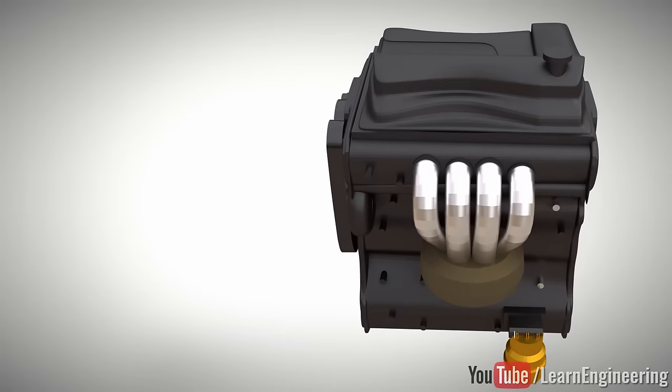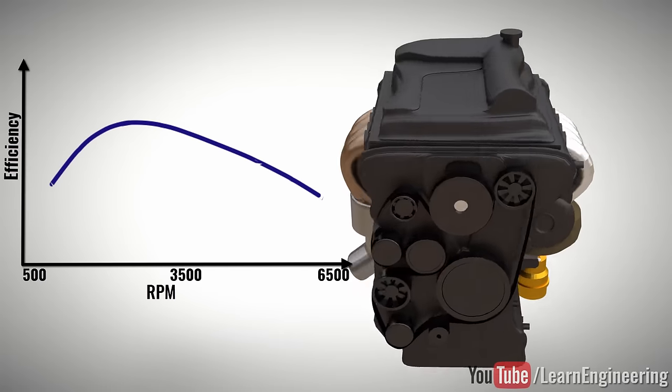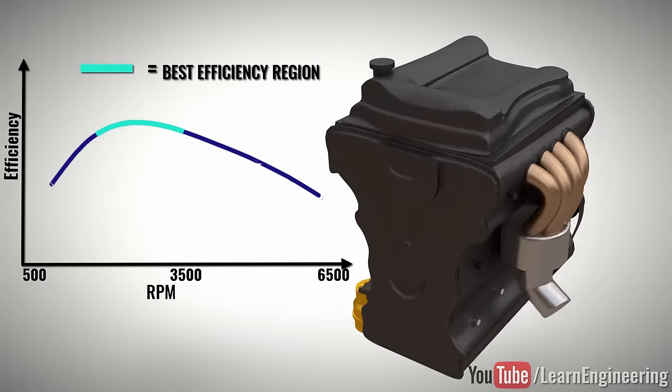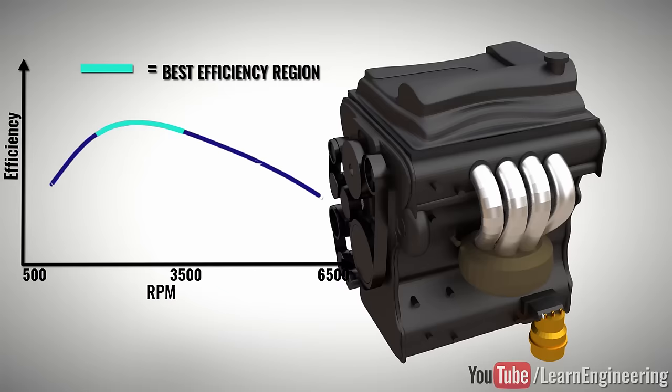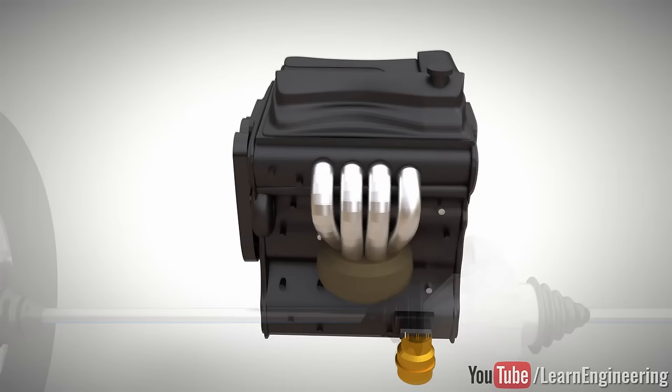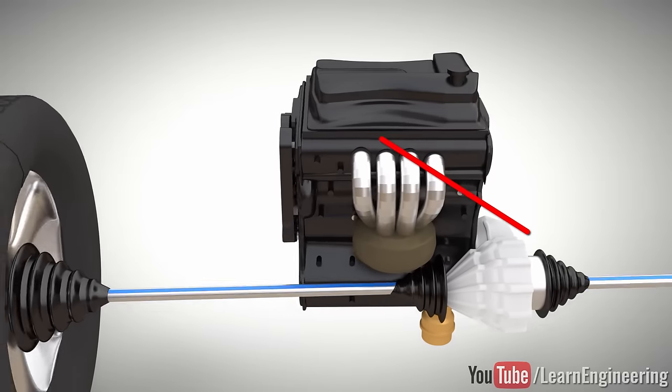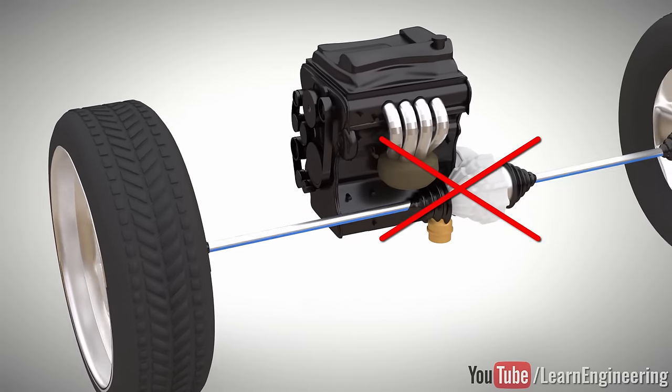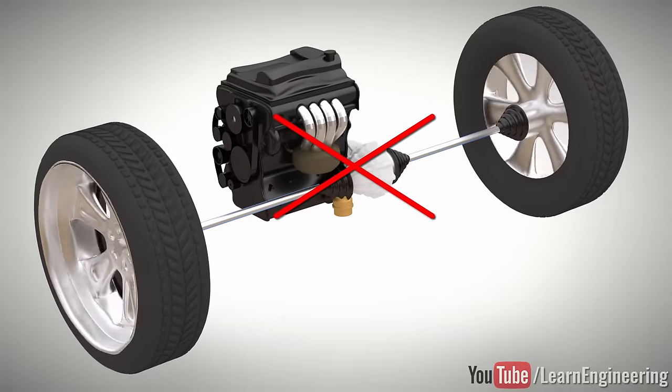An internal combustion engine produces useful torque and power only during a certain speed range. Due to this inherent problem of IC engines, controlling the drive wheel speed by directly connecting them to the engine is not a clever idea. Such an approach will give the engine a very low efficiency.